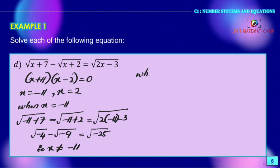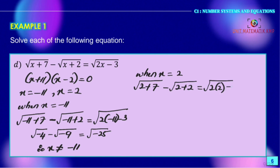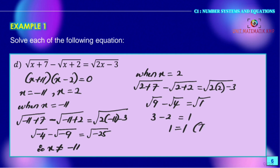When x = 2, we substitute into the original equation: √(2 + 7) − √(2 + 2) = √(2(2) − 3) → √9 − √4 = √1 → 3 − 2 = 1 → 1 = 1. Left-hand side equals right-hand side. Therefore x = 2 is the value of x for this equation.